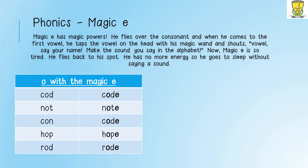Our first phonic for the day is O with the magic E. Remember our rule: the magic E jumps over the consonant, taps the vowel on its head and says, 'say your name.' The magic E then goes back to its place and does not say a sound. Let's say the following words together. If we add a magic E at the end of a word, the O becomes an O sound. Now let's try saying the word: K-O-D-E, code.